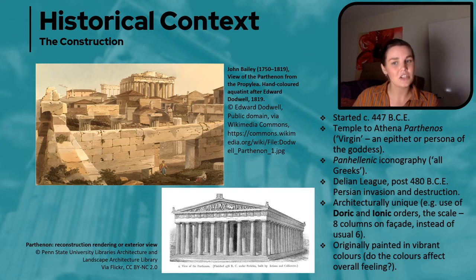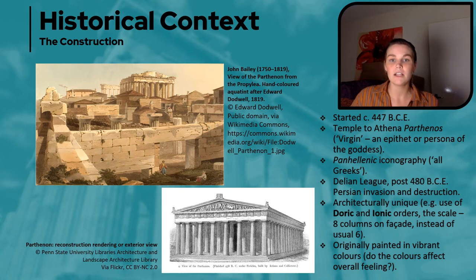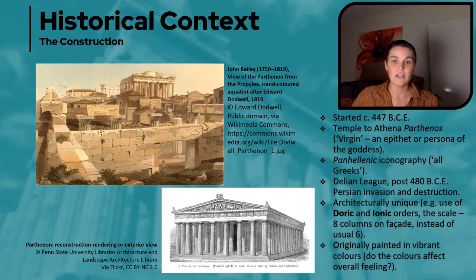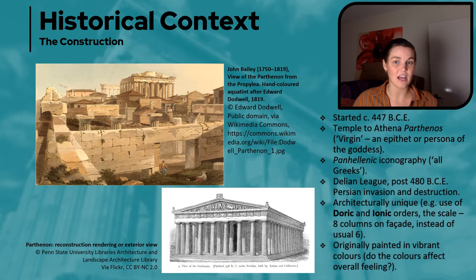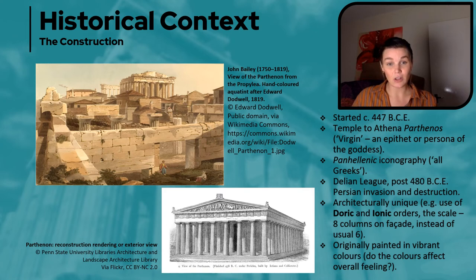I've touched on feeling — one F of our three — but in terms of form and function, let's get into that. In terms of generic architectural style, the Parthenon is classified within what is known as the Doric order, both in layout but primarily in its column style.